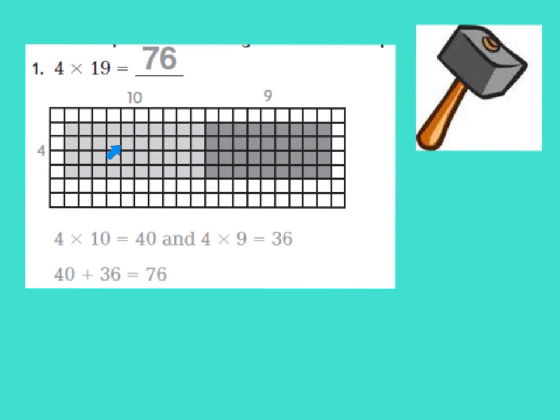Now here, they can see that they put a model here for us. It's an array, and it shows us 4 going down, and then the top shows 10 across.